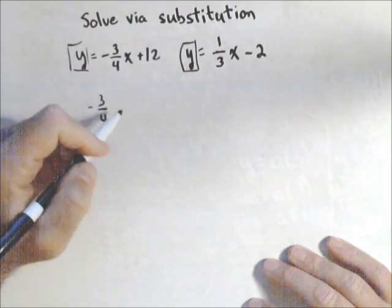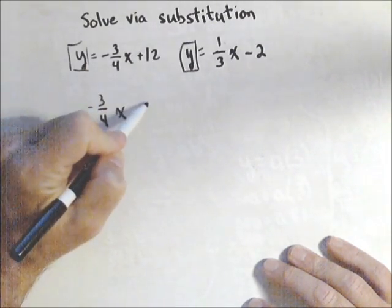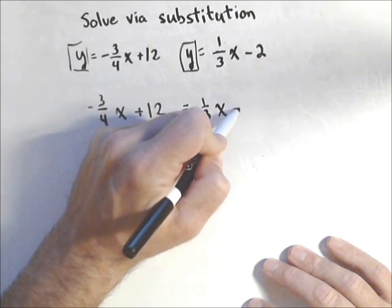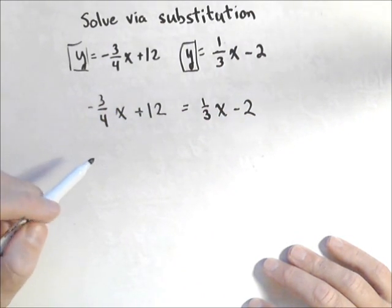So minus 3/4x plus 12 equals 1/3x minus 2.